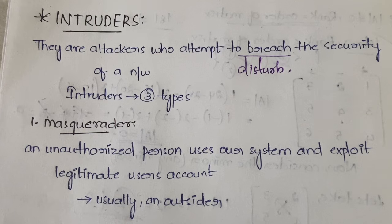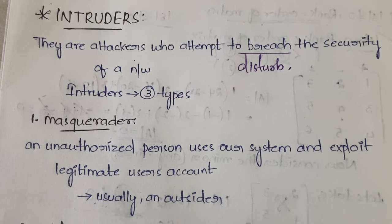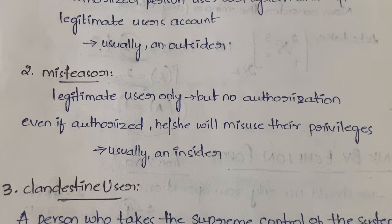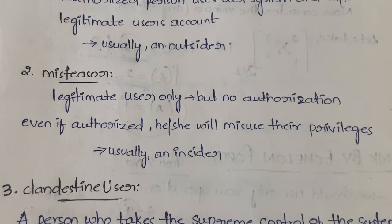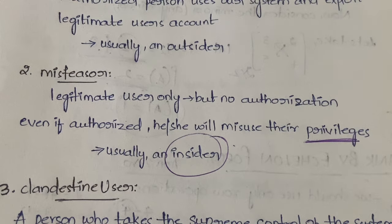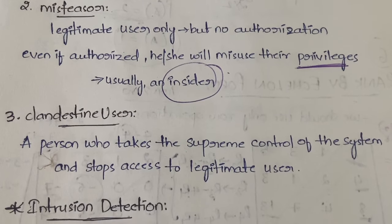A masquerader is usually an outside person. The next type is the misfeasor. In the case of a misfeasor, there is a legitimate user, but that user does not have proper authorization, or even if they do have authorization, they will misuse their privileges — that is, their permissions. Usually a misfeasor is an insider, a person who belongs to the organization but still misuses their access.